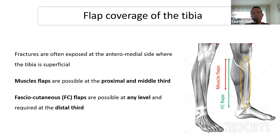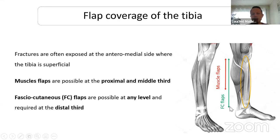The main problem is tibia soft tissue coverage, because tibial fractures are often exposed on the anterior medial side where the tibia is just under the skin. For tibia coverage there are two kinds of flap transfer. Muscle flap for the proximal and middle third of the tibia, and fasciocutaneous flap at any level — but mostly for the distal third. On the proximal and middle third you have muscle; at the distal third you have no muscle, so you cannot perform a muscle flap there — only a fasciocutaneous flap. Fasciocutaneous flap can be performed at any level.